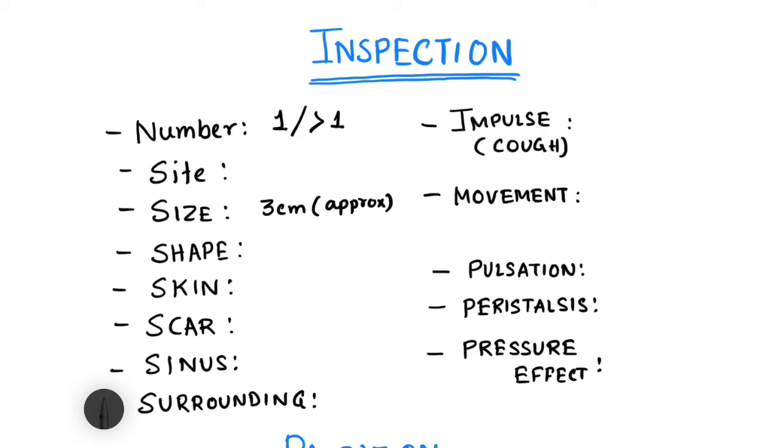Then you comment on the shape of the lump - whether it's globular, discoid, or ellipsoid. Then you examine the skin over the lump. The skin can be thickened, atrophied or thinned, tense over the lump, or there can be certain discoloration or change in color over the skin. You have to note whether there's any scar over the lump or not.